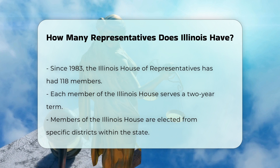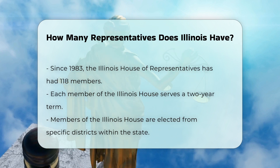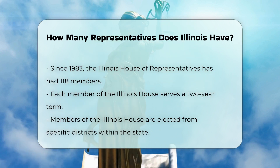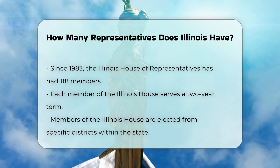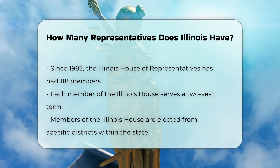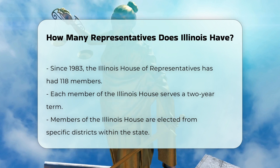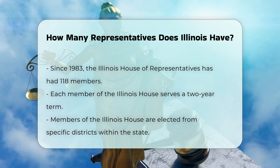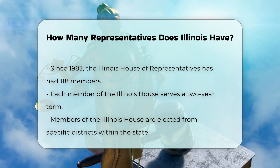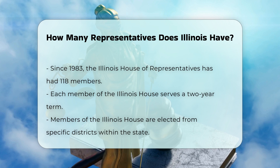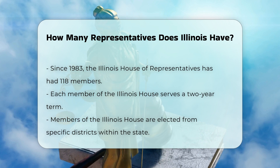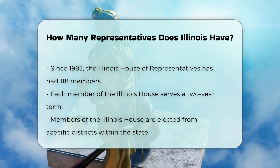In summary: at the federal level, Illinois has 17 congressional districts, each representing about 750,000 people in the U.S. House of Representatives. At the state level, the Illinois House of Representatives has 118 members, each elected from a specific district within the state.